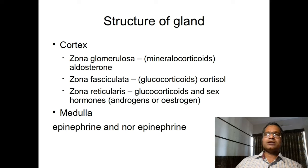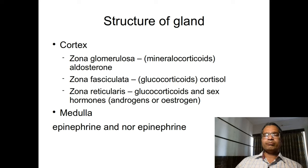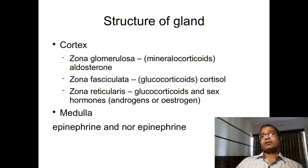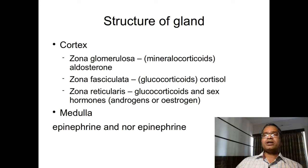Zona fasciculata secretes glucocorticoids, mainly cortisol. Cortisol controls carbohydrate and protein metabolism, mainly the conversion of proteins to carbohydrates. Additional functions include controlling lymphocyte population, decreasing the speed of fibrocyte migration (thereby delaying wound healing), and controlling autoimmune and allergic reactions.